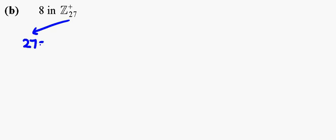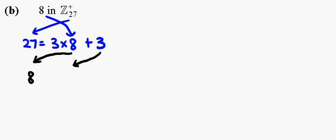27 is equal to 3 times 8 plus 3. So, by repeating the algorithm, 8 and 3 here, we now have 8 equals to 2 times 3 plus 2.